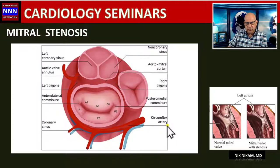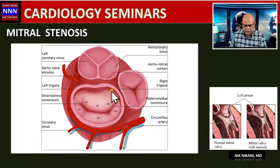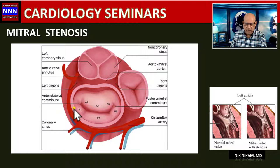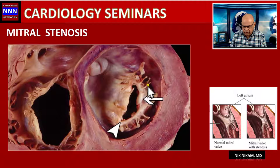Looking at the cross-section of the heart at the aortic valve level as seen in 2D echocardiography: anteriorly we have the aortic root with three cusps, and behind that the mitral valve apparatus with the anterior and posterior leaflets. Here's a pathological specimen of the left ventricle showing the mitral annulus and mitral leaflets — thin sheets of paper — with chordae attached to the papillary muscles.